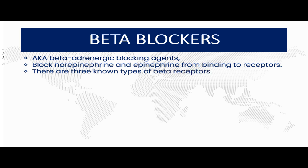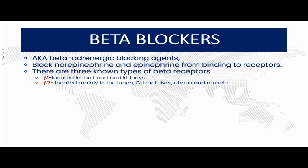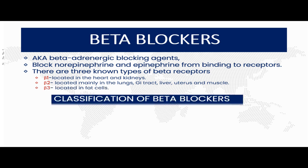We have three types of beta receptors. The beta-1 receptors are located in the heart and the kidneys. The beta-2 receptors are located mainly in the lungs, the gastrointestinal tracts, the liver, uterus, and the muscles — both the smooth muscles and the skeletal muscles. And lastly, the beta-3 adrenergic receptors found in the fat cells.